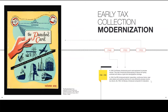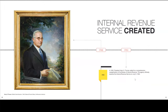Early tax collection modernization: in 1948, the Bureau introduced punch card equipment, helping to move forward from handwritten processing. In 1952, President Harry S. Truman called for a comprehensive reorganization of the Bureau of Internal Revenue. The agency officially became the Internal Revenue Service on July 9, 1953.